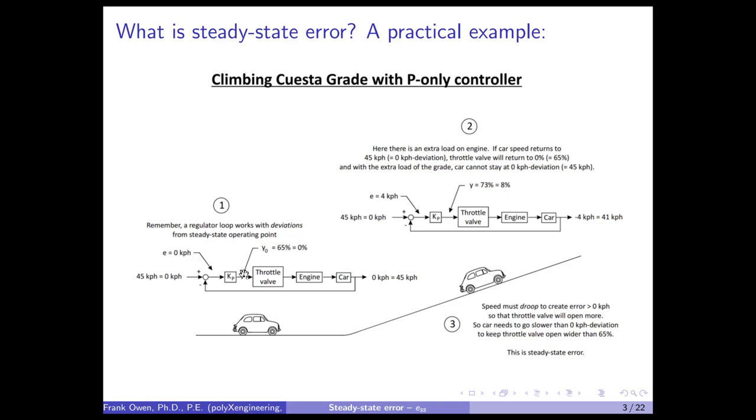and the throttle valve has a position that goes between zero and 100%. In this particular case, the throttle valve is at 65%. When I'm going 45 kilometers per hour on flat ground, the throttle valve is at 65%, which makes the car go 45 kilometers per hour.